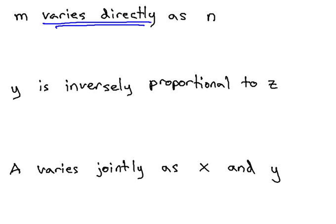One way to represent this equation is when we see varies directly, we will divide the variables. M varies directly as n, meaning if we divide the variables m by n,